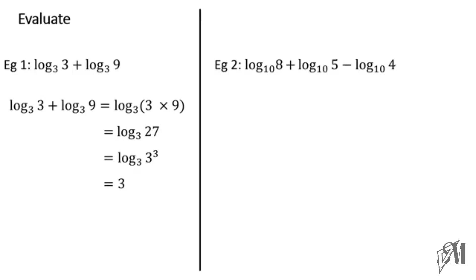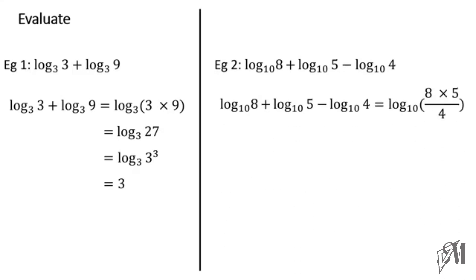Next example: log base 10 of 8 plus log base 10 of 5 minus log base 10 of 4. Both addition and subtraction are involved — the addition part becomes multiplication and the subtraction part becomes division. This gives log base 10 of (8 into 5 divided by 4). Since 8 times 5 is 40 and 40 divided by 4 is 10, we get log base 10 of 10. By the third law, the answer is 1.